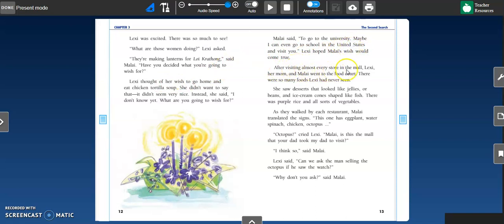After visiting almost every store in the mall, Lexi, her mom, and Malay went to the food court. There were so many foods Lexi had never seen. She saw desserts that looked like jellies or beans and ice cream cones shaped like fish. There was purple rice and all sorts of vegetables. As they walked by each restaurant, Malay translated the signs. This one has eggplant, water spinach, chicken, octopus.